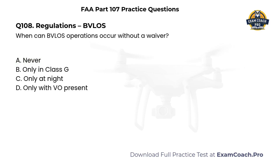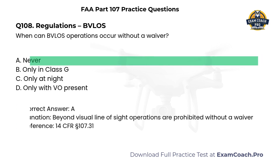Regulations. Beyond visual line of sight. When can beyond visual line of sight operations occur without a waiver? A. Never. B. Only in Class G. C. Only at night. D. Only with a visual observer present. Correct answer: A. Beyond visual line of sight operations are prohibited without a waiver.